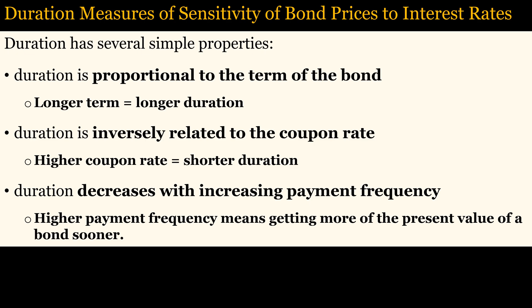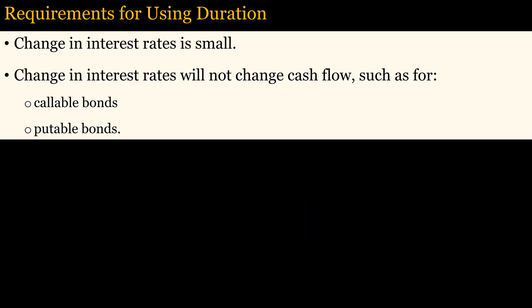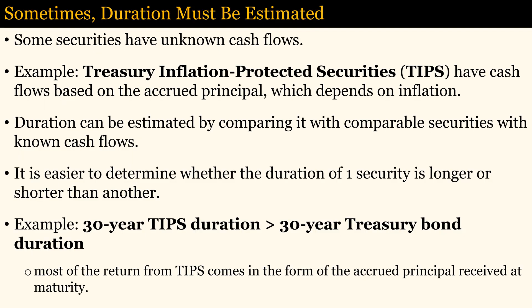Duration has several simple properties. Duration is proportional to the maturity of the bond, since the principal repayment is the largest cash flow and is received at maturity. Duration is inversely related to the coupon rate, since there will be a larger difference between the present values for earlier payments over the lesser value for the principal repayment. Duration decreases with increasing payment frequency, since half of the present value of the cash flows is received earlier than with less frequent payments. The simplest formulas estimate prices better when the change in interest rates is small and will not affect the cash flow of the bond. Duration can usually be estimated by comparing it with comparable securities with known cash flows.